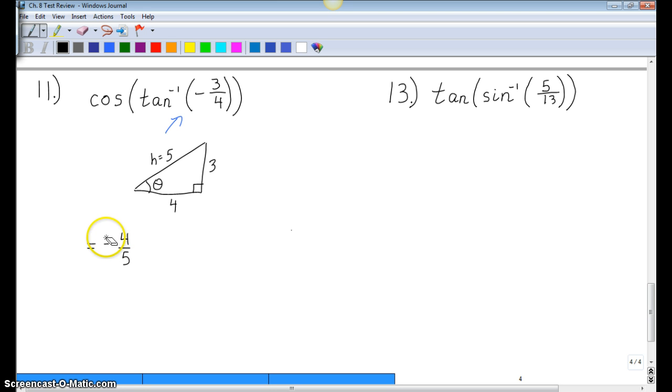To answer that question, we go back and say, well, tangent inverse of a negative number puts us in quadrant 4. So cosine in quadrant 4, yes, it's 4 fifths, but is it positive or negative? And cosine in quadrant 4 is positive. So your final answer is positive 4 fifths.